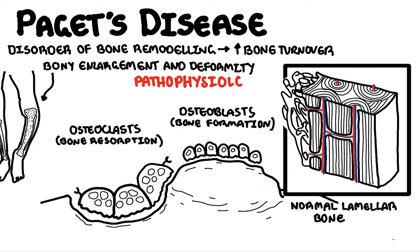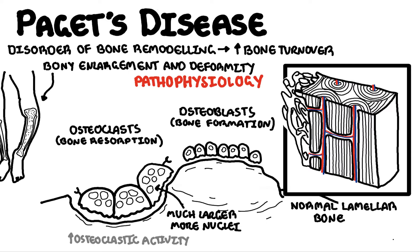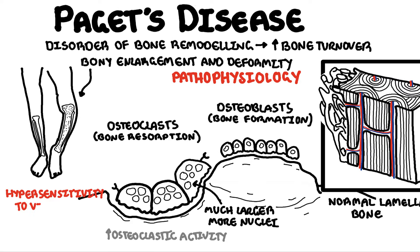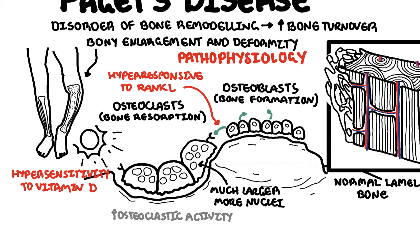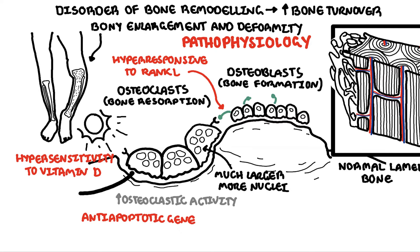In Paget's disease, there are a few things that are found. Firstly, there is an increase in number and activity of osteoclasts, the bone breaking cells. Osteoclasts in Paget's disease are much larger, with a greater number of nuclei — up to 100, compared to 3 or 5 found in normal osteoclasts. These large osteoclasts are more sensitive to vitamin D, more responsive to RANK ligand, which is expressed by osteoblasts to help stimulate osteoclasts, and they also express anti-apoptotic genes, meaning they are less likely to die quickly. All these factors cause osteoclast activity to be increased in Paget's disease of the bone.